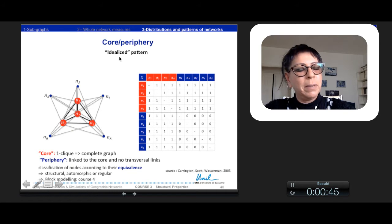Here we have an idealized pattern formed by a core of one clique, which is a complete graph, with a periphery of nodes that are linked to the core, but not transversally. So this network can be represented in this matrix here.